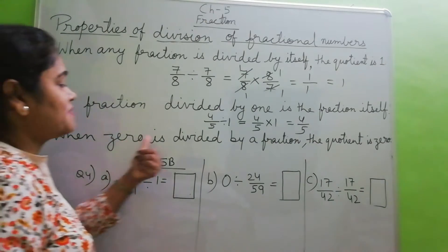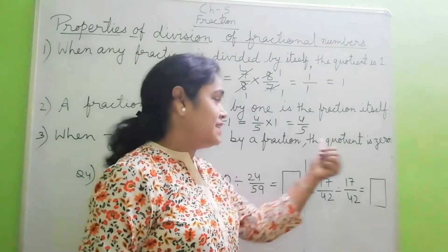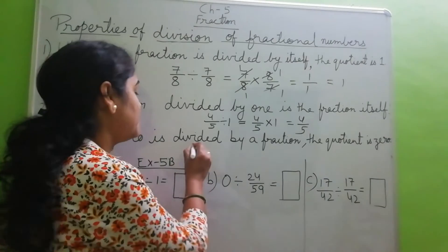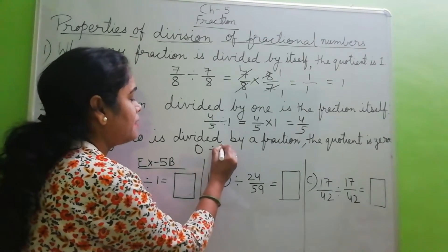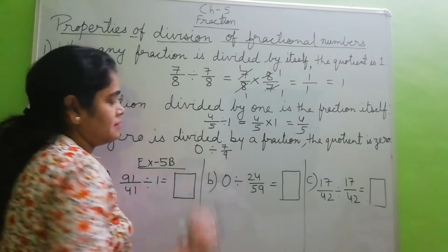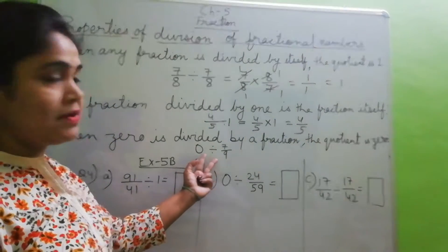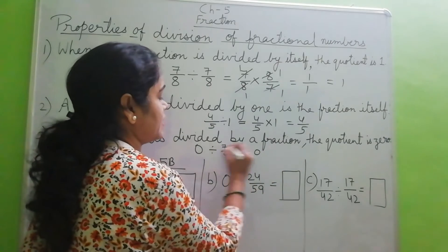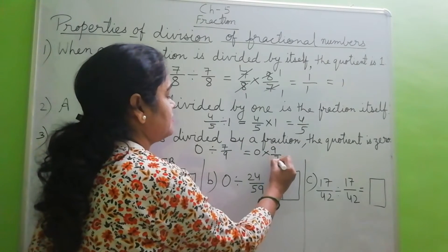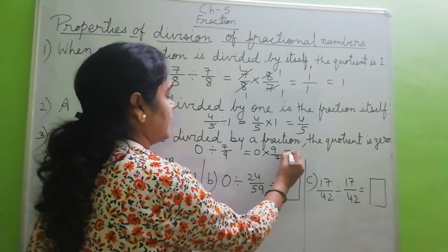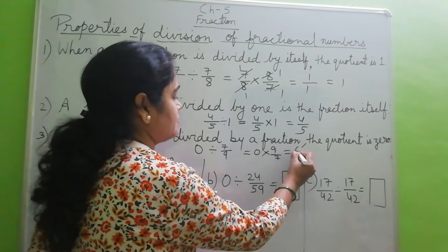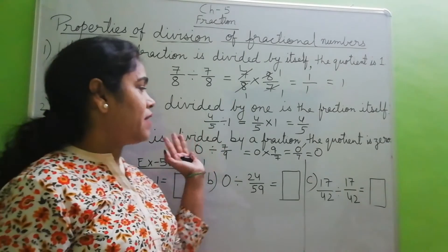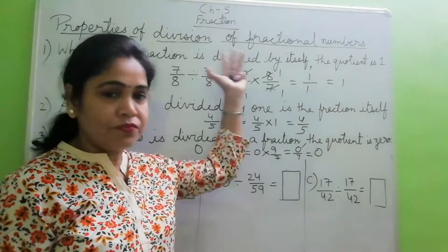Next: when 0 is divided by a fraction, the quotient is 0. So 0 is divided by a fraction — say 7 by 9. We change the division sign to multiplication and write the multiplicative inverse, which is 9 by 7. Then 0 multiplied by 9 is 0, over 7, so the answer is 0. This way we find and prove the rule.